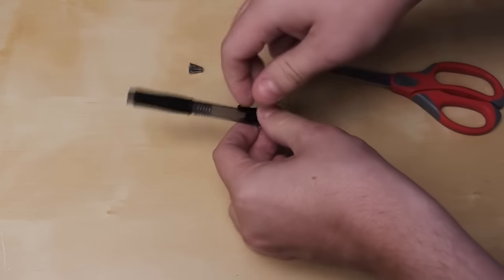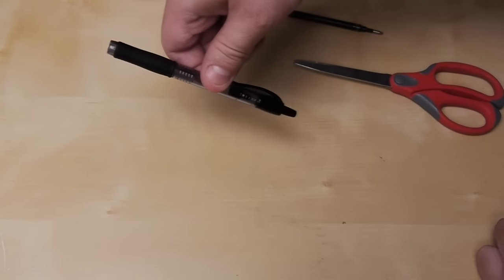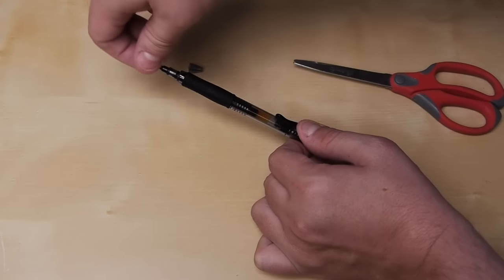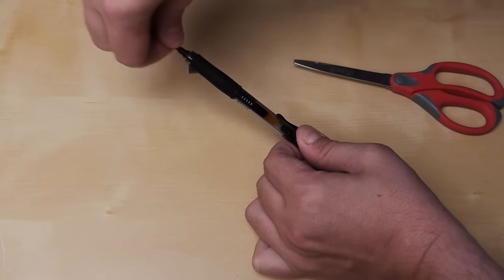Now we're going to attach the top to the bottom again. Take your ink cartridge and press the spring down. This will load it.